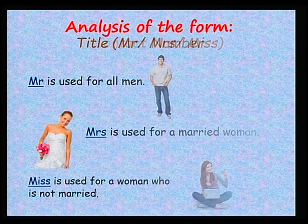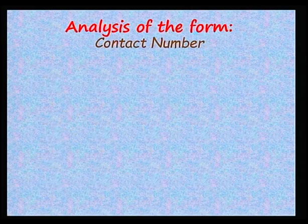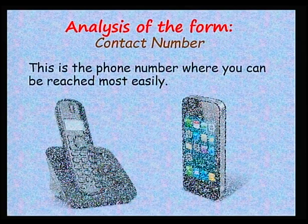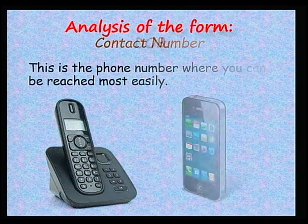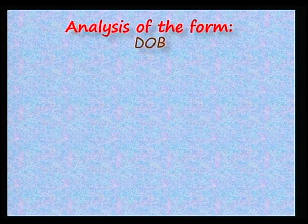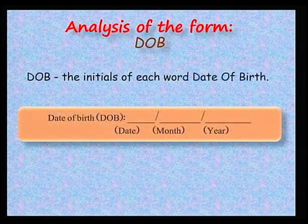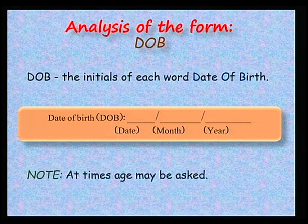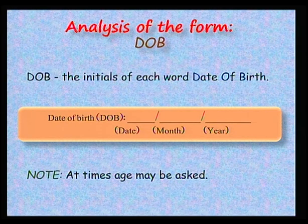Tell me more about the contact number. As you mentioned earlier, this is the phone number where we can be reached most easily. What about DOB? DOB are the initials of each word — date of birth. We have to write the date on which we were born. Some forms might ask your age directly, where you write down how old you are.